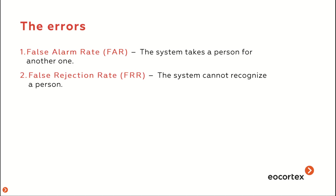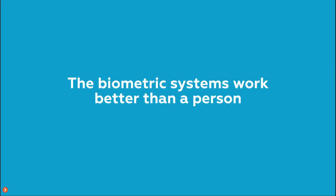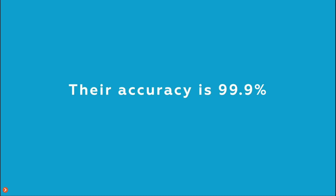The second type of error happens when the system cannot recognize a person, preventing them from accessing the premises. This is also related to incorrect operating conditions of biometric systems. Despite these errors, biometric systems work better than humans and are a sound auxiliary tool for security services.